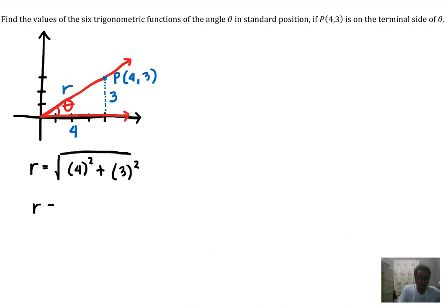So R equals the square root of, 4 squared is 16, and then 3 squared is 9. 16 plus 9 is 25. The square root of 25 is 5, so R is 5.